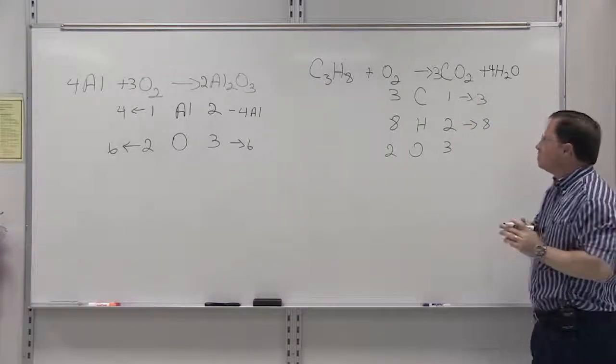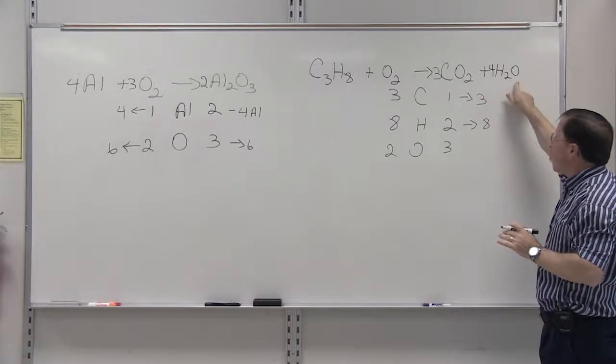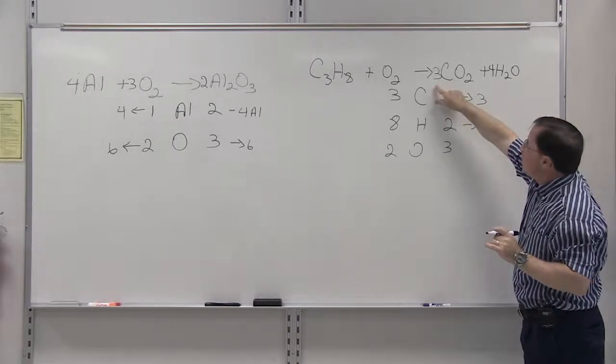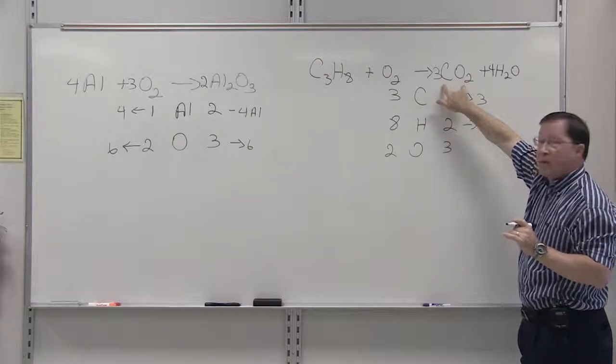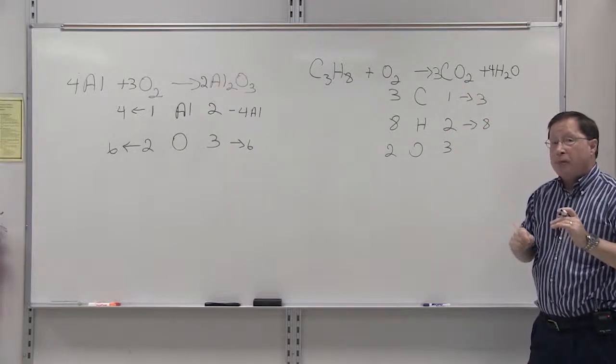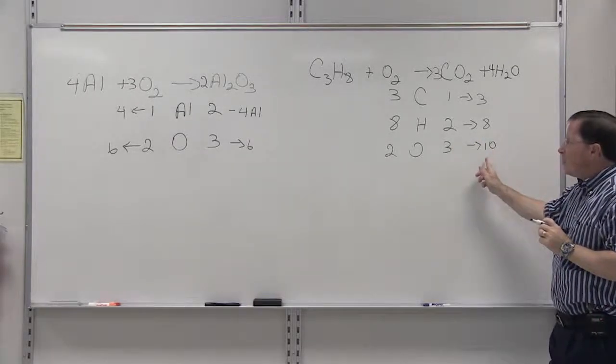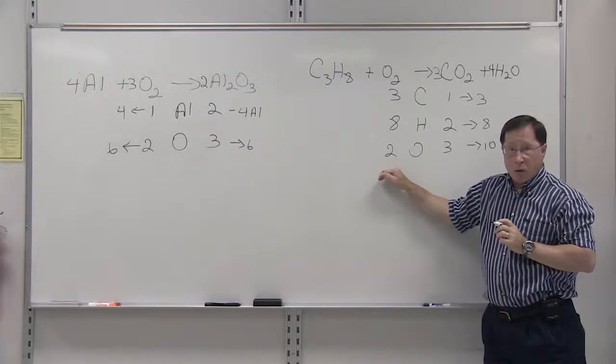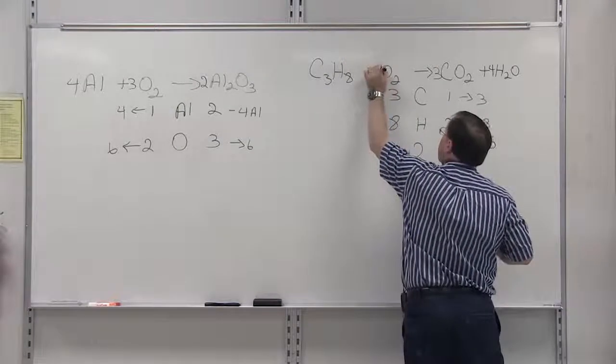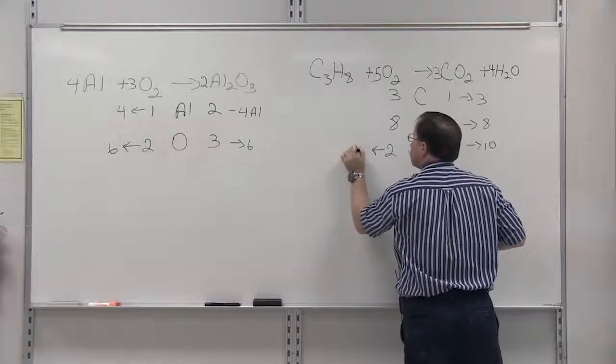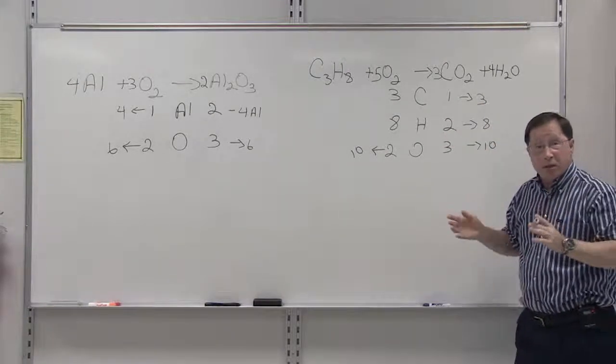Now let's count the oxygens. We have four water molecules, so we have four oxygens here. We have three carbon dioxide molecules, so we have six oxygens here for a total of ten. So there's ten oxygens over here. If you have ten oxygens here and two oxygens here, you simply have to multiply two by five to get ten. When you recheck the equation, you can see that it's balanced.